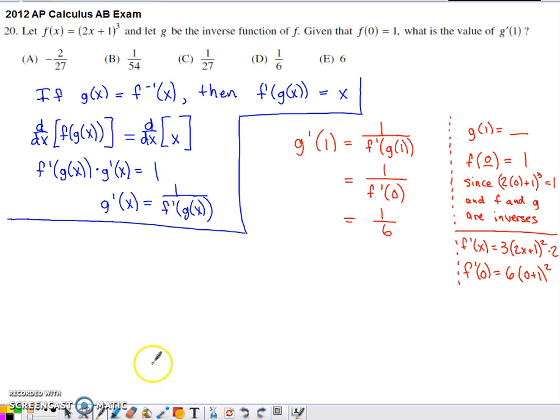Here's problem number 20 from the 2012 AP Calc Multiple Choice Set. Non-calculator question gives us f of x, says g is the inverse of f, tells us that f of 0 is 1, and asks us for the value of g prime of 1.